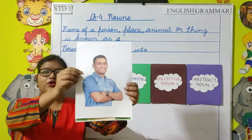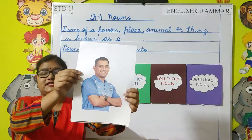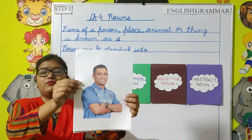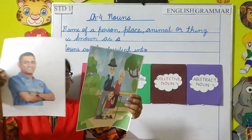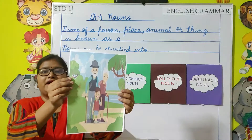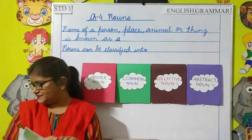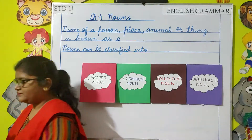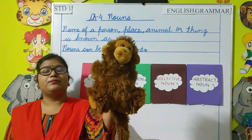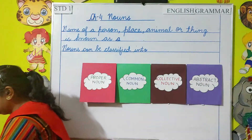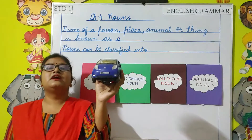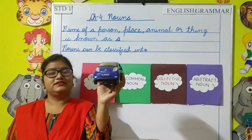Children, who is he? He is Mahendra Singh Dhoni. Here Mahendra Singh Dhoni is the name of a person. Where are they? They are in a park, so here park is a place. Which animal is this? This is a monkey, so monkey is an animal. What is this, children? This is a car, so car is a thing.